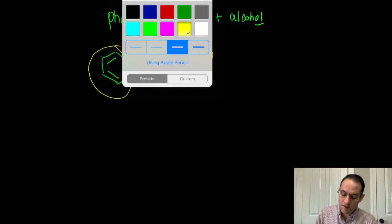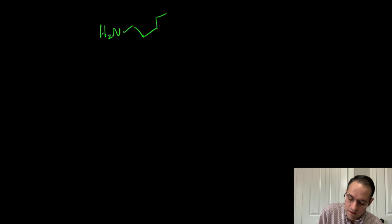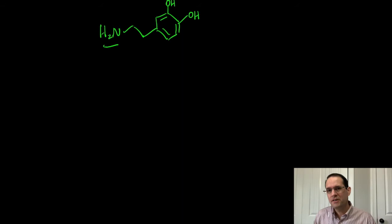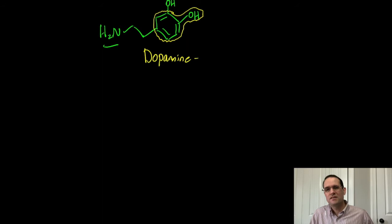There are many different natural products that contain the phenol group. We've got dopamine, which has an amine functional group and two phenol functional groups. Dopamine is produced in the brain as a neurotransmitter, and it is deficient in patients that have Parkinson's disease.